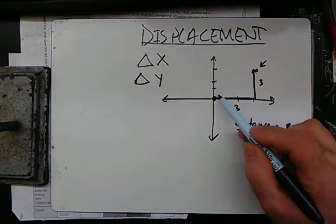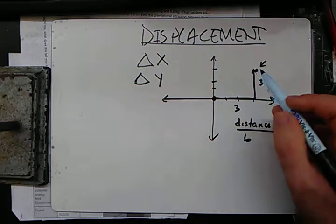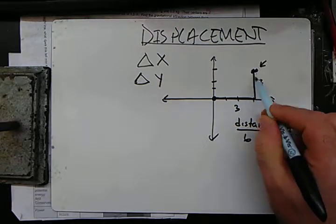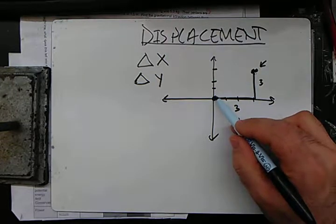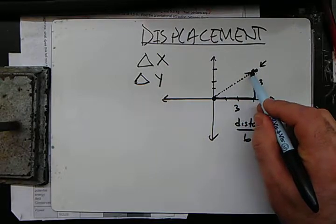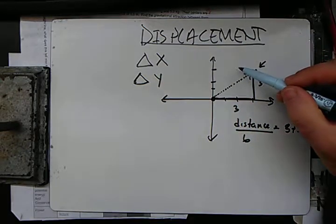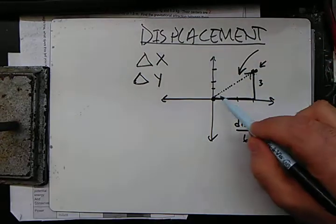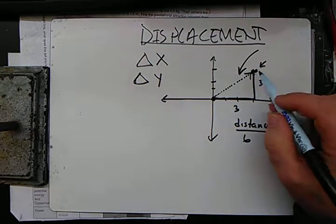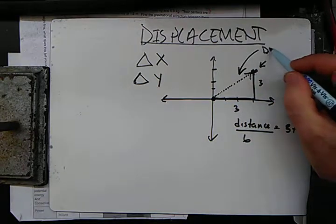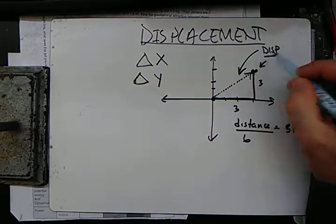But the displacement is the straight line path from the beginning to the end. So if I take, and I were to be like a bird or something like that, I could fly, I wouldn't fly like this and like this, I would fly from here directly to here. So the displacement is that length between the beginning and the end displacement.